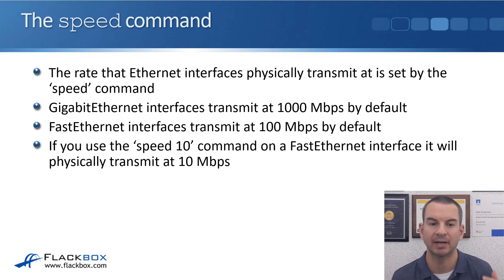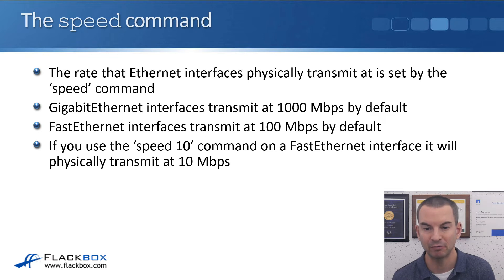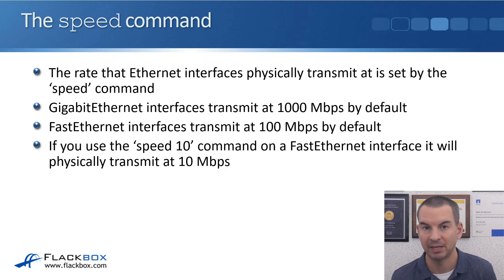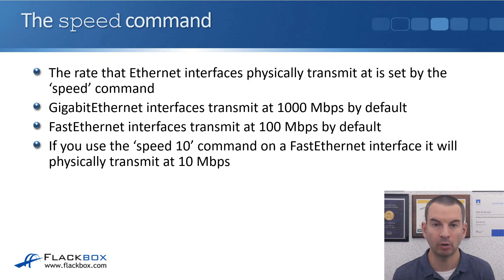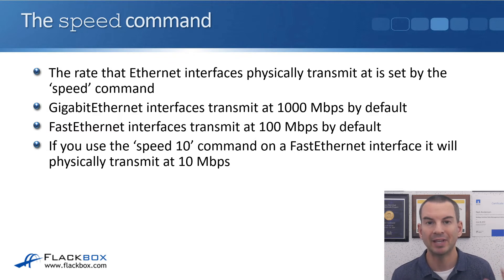Starting with the speed command first. The rate that Ethernet interfaces physically transmit at is set by the speed command. Gigabit Ethernet interfaces transmit at 1000 Mbps by default — that's 1 Gbps — and Fast Ethernet interfaces transmit at 100 Mbps by default. For example, if you use the 'speed 10' command on a Fast Ethernet interface, it will physically transmit at 10 Mbps instead. You need to make sure you manually set the speed on both sides of the link, as it changes the actual physical speed of the interface from 100 Mbps to 10 Mbps.